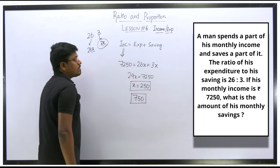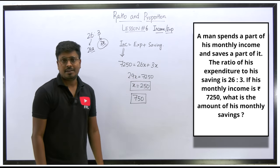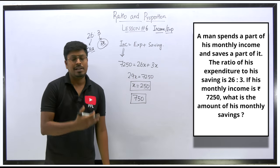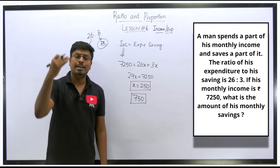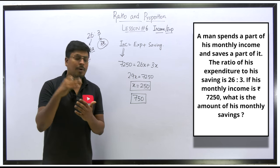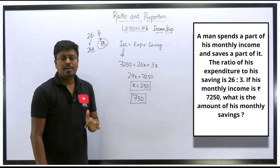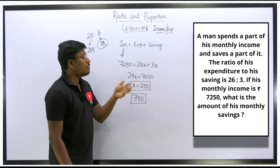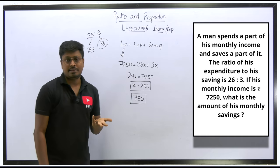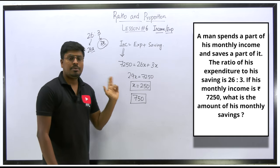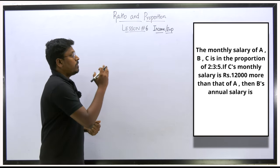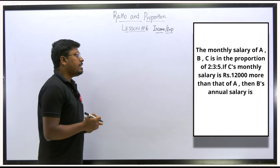When dealing with two persons we divide their equations, but here it's only one person, so we write all values in a single expression and solve directly. After finding x = 250, the monthly savings is 3x = ₹750.